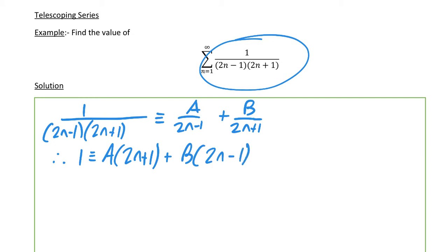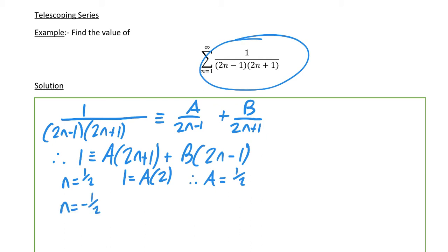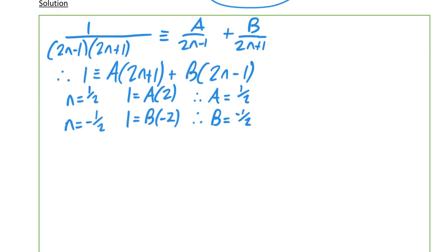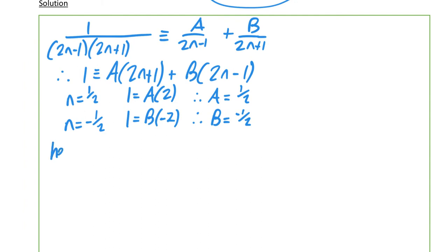When we substitute n = 1/2, that gives us 1 = 2A, which means A = 1/2. Also, putting in n = −1/2 gives us 1 = −2B, therefore B = −1/2.